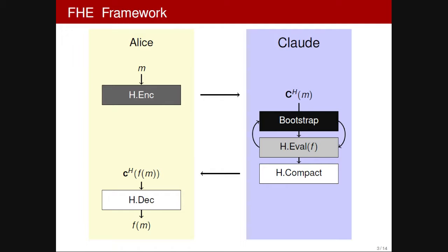This theoretical framework is good in theory — you can achieve fully homomorphic encryption this way — but it is not very efficient in practice. Bootstrapping is too costly and takes too long. For practical applications, we deal with leveled homomorphic encryption, using only a limited level for the function, so we are not using bootstrapping anymore, and F needs to have a low degree.